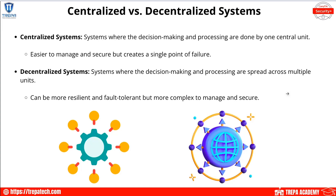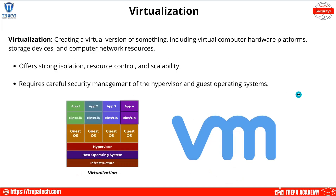Centralized systems — think single-pane-of-glass or software-defined networking — are where decision-making and processing are handled by one central unit. Decentralized systems are where decisions and processing are distributed across multiple different units, which is more like traditional networking.